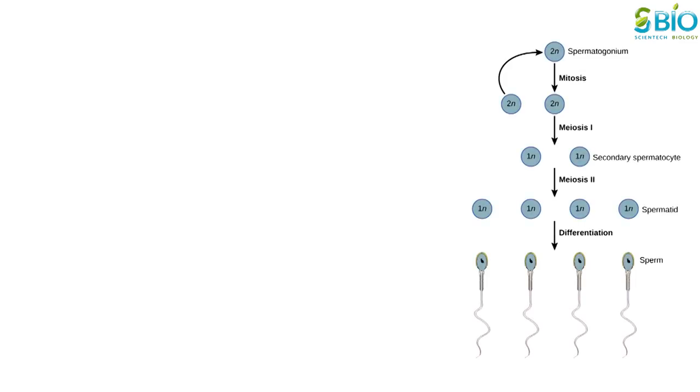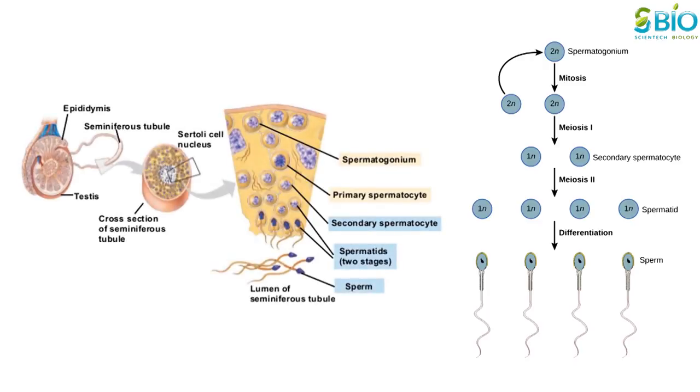Spermatogenesis is a process in which spermatozoa are produced from male primordial germ cells by mitosis and meiosis. Spermatogenesis takes place within several structures of the male reproductive system. The initial stage occurs within the testis and progresses to the epididymis where the developing gametes mature and are stored until ejaculation. The seminiferous tubules of the testis are the starting point for the process.